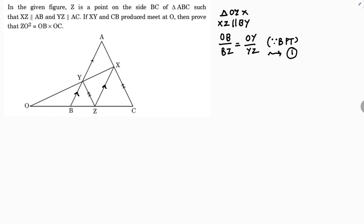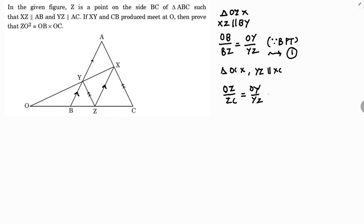They also gave that YZ is parallel to AC, but I will take YZ as parallel to XC. So here, in triangle OZX, YZ is parallel to XC. If I apply BPT here, I get OZ by ZC equals OY by YZ. This is also because of BPT — a line drawn parallel to one side will divide the other two sides in the same ratio. This is Equation 2.